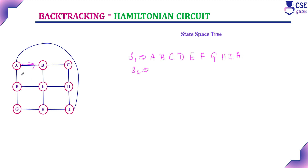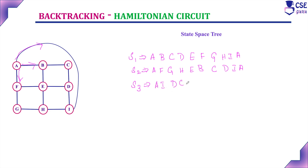The second solution, considering the path through F, is: A to F, F to G, G to H, H to E, E to B, B to C, C to D, D to I, I to A. And considering the path through I, the third solution is: A to I, I to D, D to C, C to B, B to E, E to H, H to G, G to F, F to A.